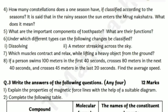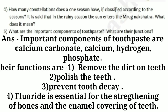Next question: what are the important components of toothpaste and what are their functions? Answer: important components of toothpaste are calcium carbonate and calcium hydrogen phosphate. Their functions are: first, remove dirt on teeth; second, polish the teeth; third, prevent tooth decay; fourth, fluoride is essential for the strengthening of bones and the enamel covering of teeth. Write your answer point-wise.